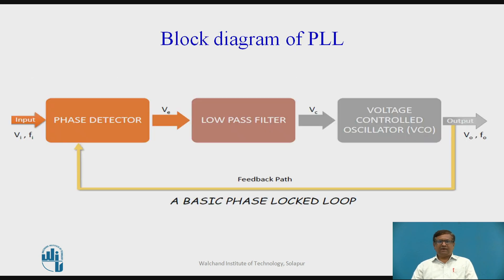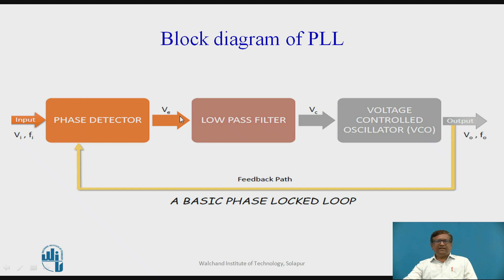Let us have a look at the block diagram of PLL. The block diagram consists of three blocks: phase detector, low pass filter, and voltage controlled oscillator. The output is fed back to the input through a feedback path, which is why PLL is called a feedback system.